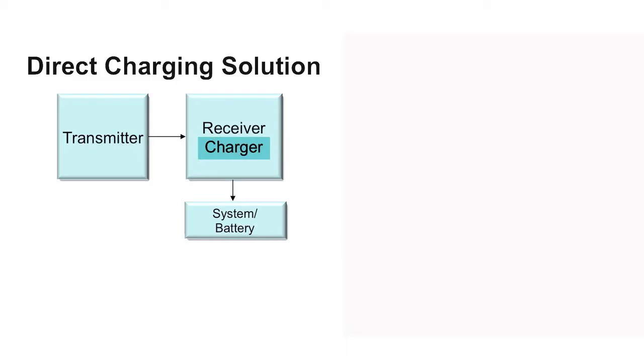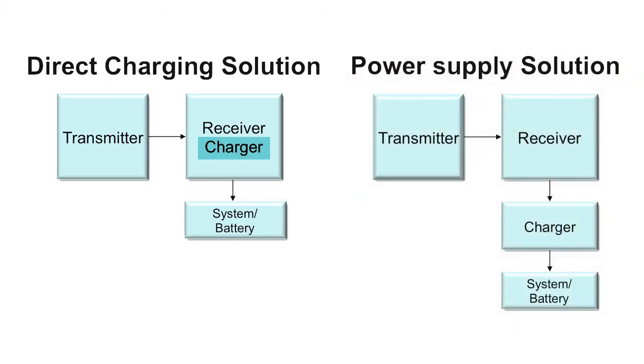Texas Instruments offers different solutions on the power receiver side. There are what we call direct charging solutions. In this solution, the battery charger is integrated inside the receiver. Then we have a power supply receiver series where the receiver will provide a constant power supply to the discrete charger.